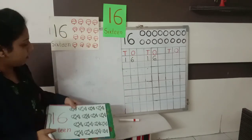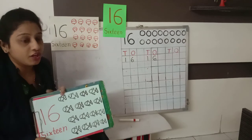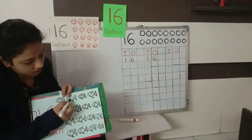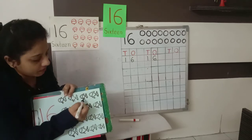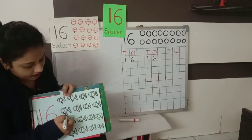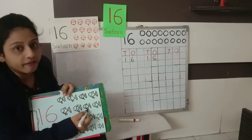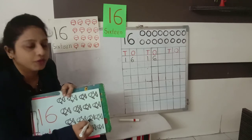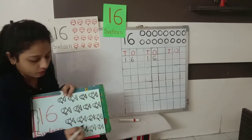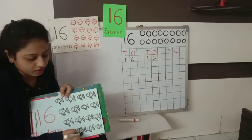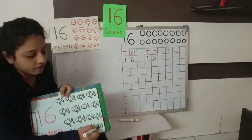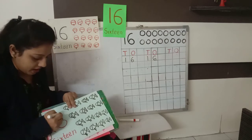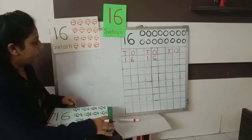Now see, what are these? Fish. So many fish. Let's count. How many fish are here? 1, 2, 3, 4, 5, 6, 7, 8, 9, 10, and then 1-1, 11; 1-2, 12; 1-3, 13; 1-4, 14; 1-5, 15; and 1-6, 16. 1 and 6, 16. Okay?